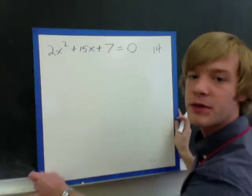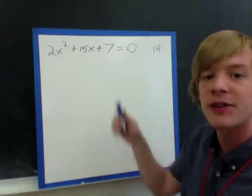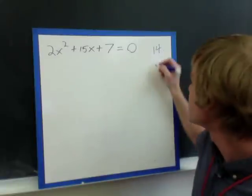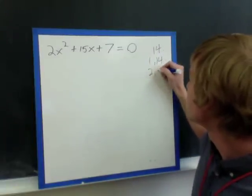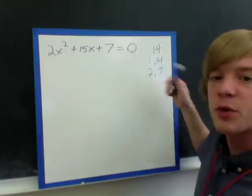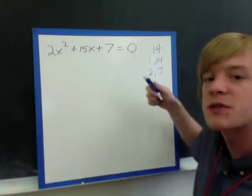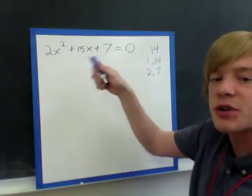So I've multiplied those, and I've got 14. Now I want to find a pair of factors that adds to 15. So we should see here that 1 and 14 is the pair we want, because 1 plus 14 gives us our middle term, 15.